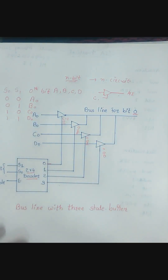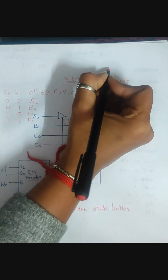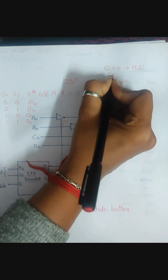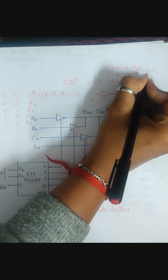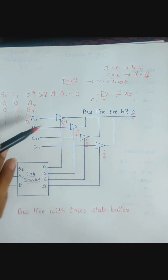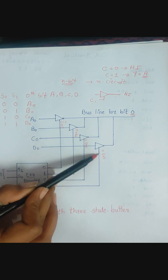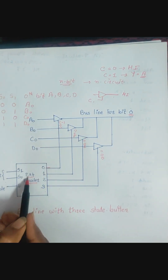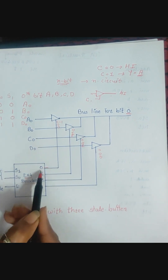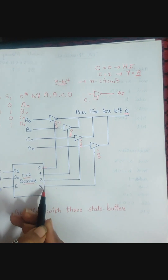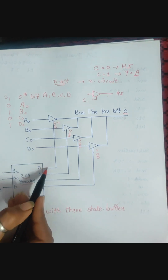This is a very easy circuit. Just keep in mind: if C equals zero it is high impedance, and if C equals one the output equals the input. At a time, only one buffer needs to be active and the others should not be active. For that we use a 2×4 decoder, which lets us select signal 0, 1, 2, or 3 — only one at a time. That is the logic of the 2×4 decoder. If the zeroth line is selected, it outputs one and the others are deactivated, so only A0 passes.